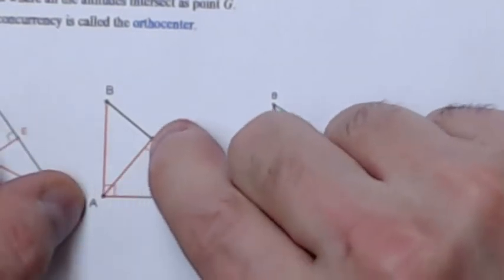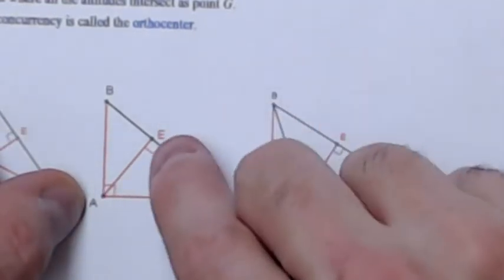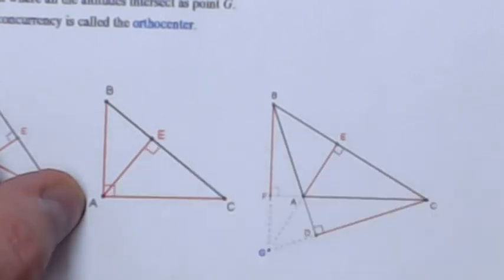Right angle, and that's the altitude from base BC to A, this one here.